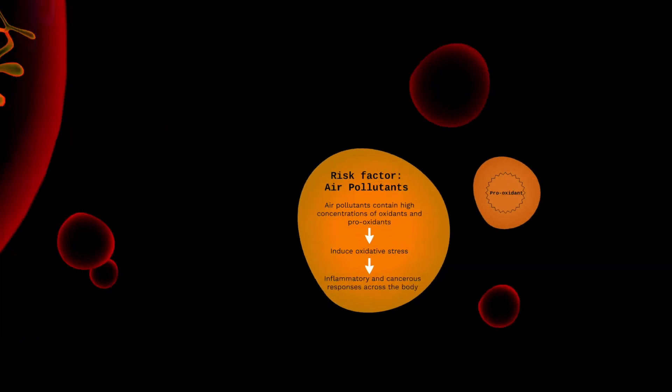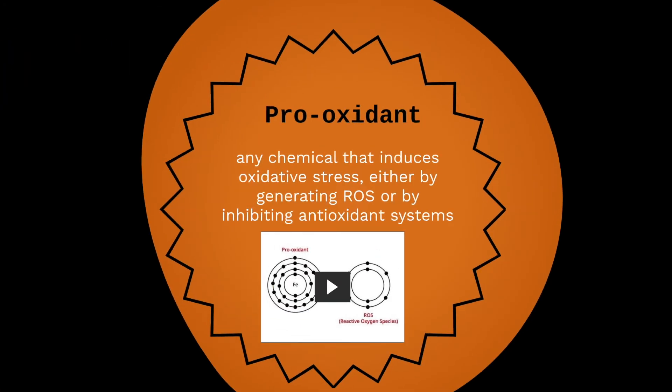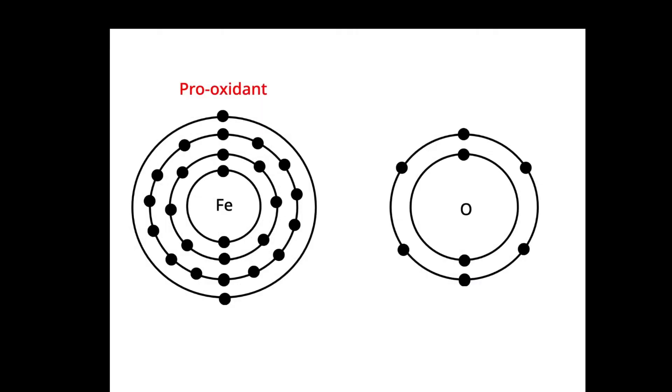However, that often is not the case for those surrounded by air pollution. Air pollutants, such as particulate matter and gases, contain high concentrations of oxidants and pro-oxidants. A pro-oxidant is defined as any chemical that induces oxidative stress, either by generating ROS or by inhibiting antioxidant systems. For example, a pro-oxidant can donate an electron to an oxygen atom, generating an ROS molecule.